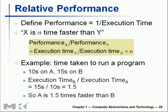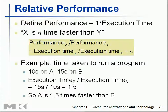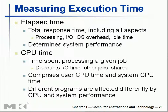Relative performance is important. We define performance by execution time — the time required to execute one single task. If you have two computers, performance of X equals execution time of Y divided by execution time of X. For example, if A requires 10 seconds and B requires 50 seconds, the performance ratio gives you 1.5 — A is 1.5 times faster because it only requires 10 seconds. That's how you calculate it, and it appears in the exam.